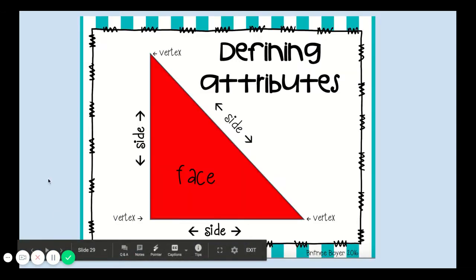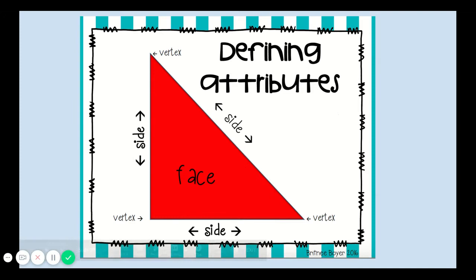When we're talking about 2D and 3D shapes, especially 2D shapes, we describe them in three ways. We talk about the number of sides and the number of vertices, and then when we have 3D shapes, the number of sides, faces, and vertices.